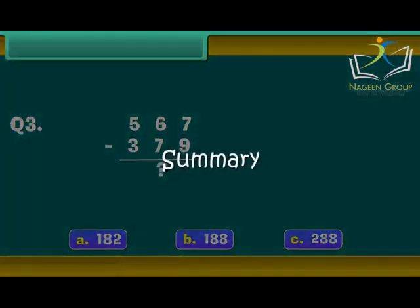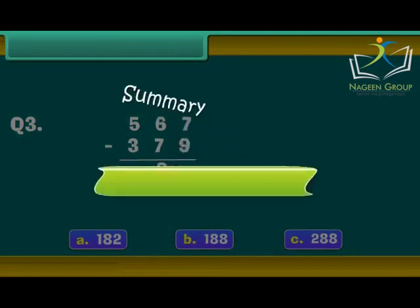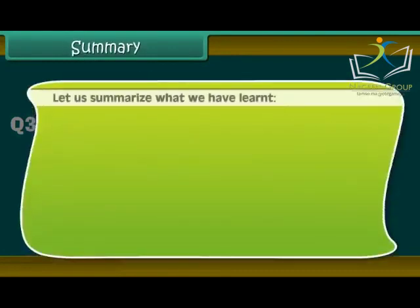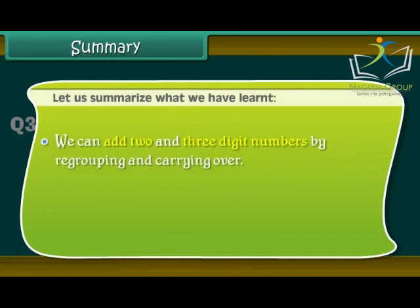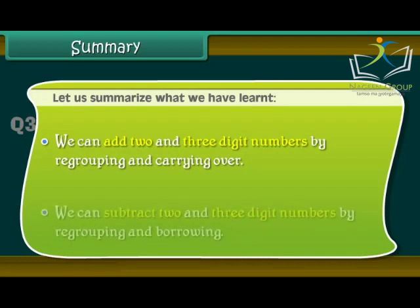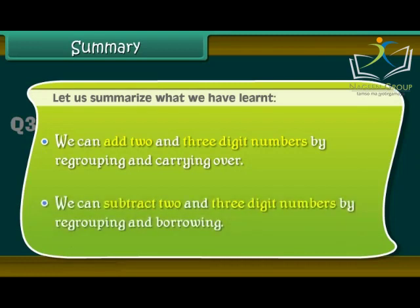Summary. Let us summarise what we have learnt. We can add 2 and 3 digit numbers by regrouping and carrying over. We can subtract 2 and 3 digit numbers by regrouping and borrowing.